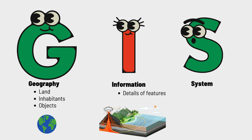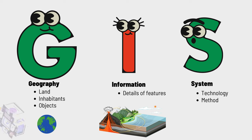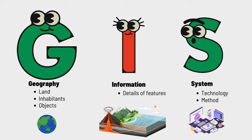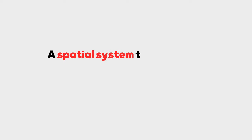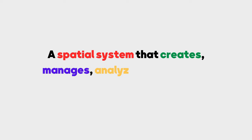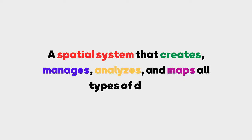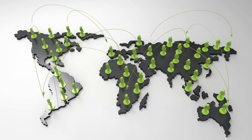Lastly, S stands for System, incorporating technology and methods. It's the system that captures objects on Earth's surface and seamlessly integrates them with the gathered information. As such, we can define GIS as a spatial system that creates, manages, analyzes, and maps all types of data. GIS connects data to a map, integrating location data — where things are — with all types of descriptive information, what things are like there.